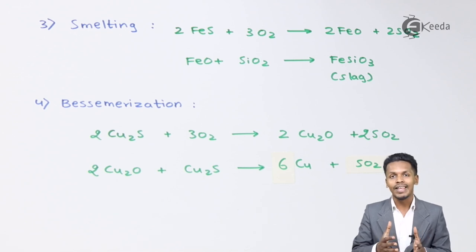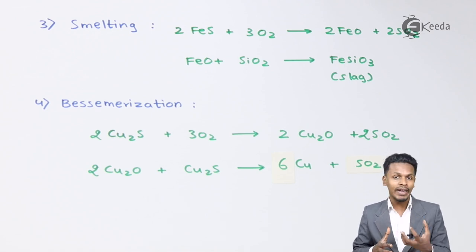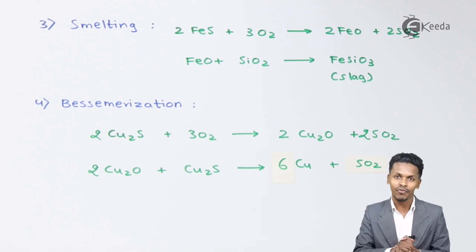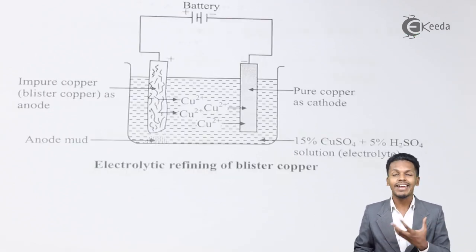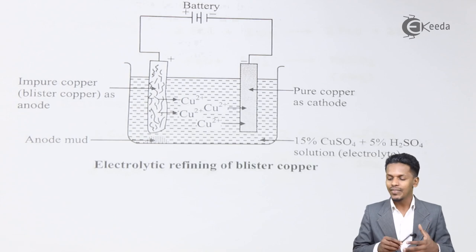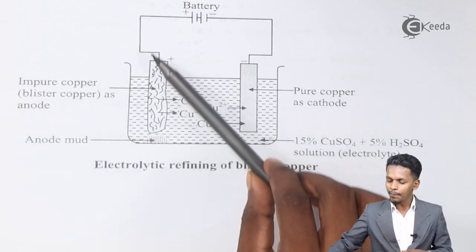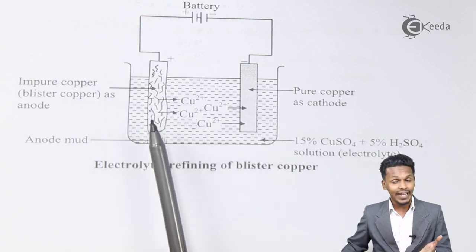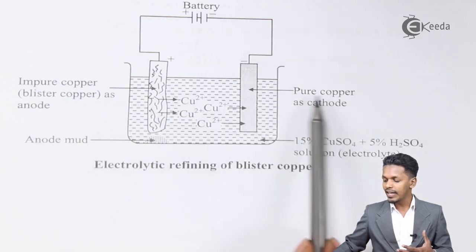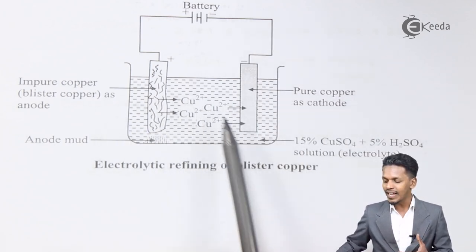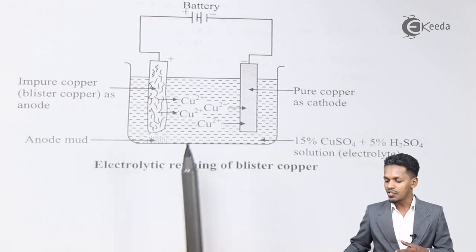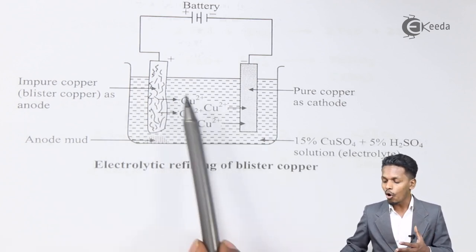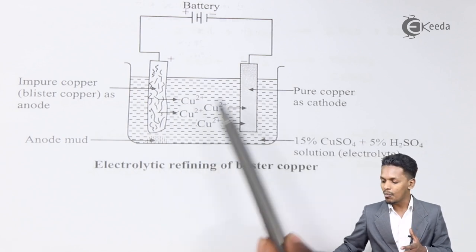The copper obtained is not completely pure, so to make it pure we use an electrolytic method, achieving 99.99% purity. The copper from Bessemerization is poured into a sand mold, giving blisters of copper on the surface — this is blister copper. Being impure, it is connected as the anode in an electrolytic cell powered by an external battery, while pure copper acts as the cathode. The electrolyte consists of 50% CuSO4 and 5% H2SO4.